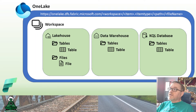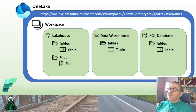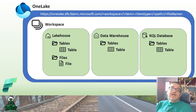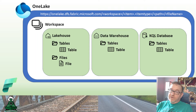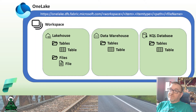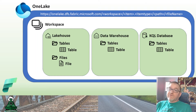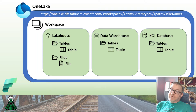As you start working in One Lake, you have various assets that you can build out: lake houses, data warehouses, KQL databases. Each of these represents another level within the structure of the data in your environment. A lake house, for example, has two primary top-level folders — a folder for your tables, which are delta storage, and a folder for files, which could be any type of file, like a typical lake house or data lake experience.